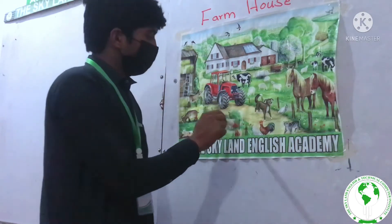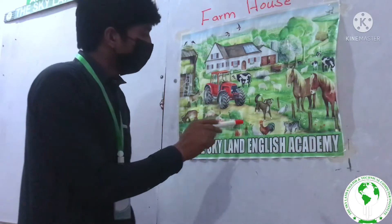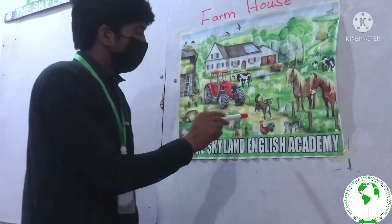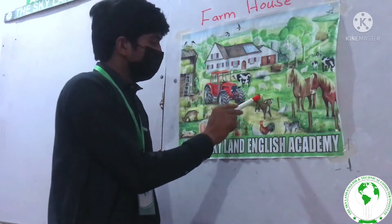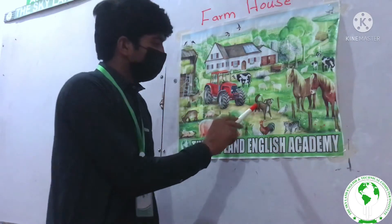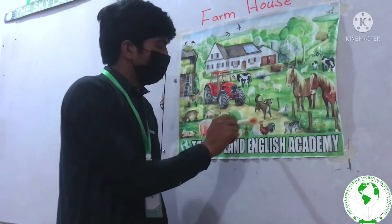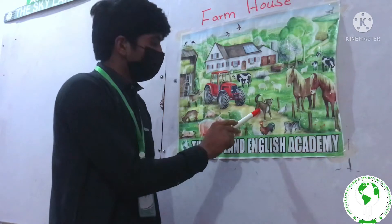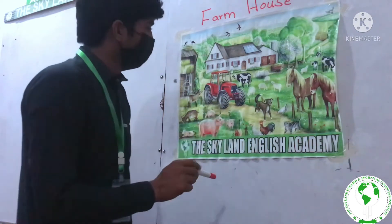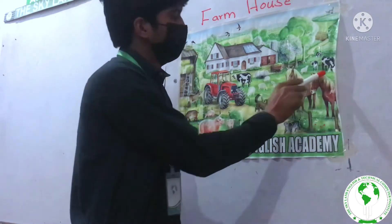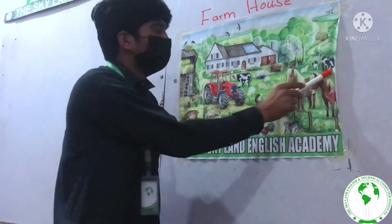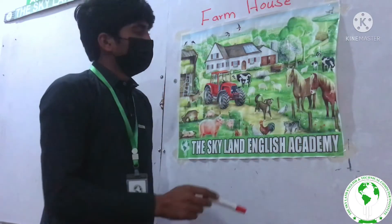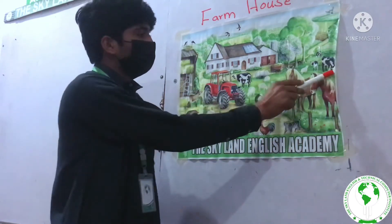This is a dog, and the dog color consists of three colors — like white color, black color, and brown color. This duck is walking.